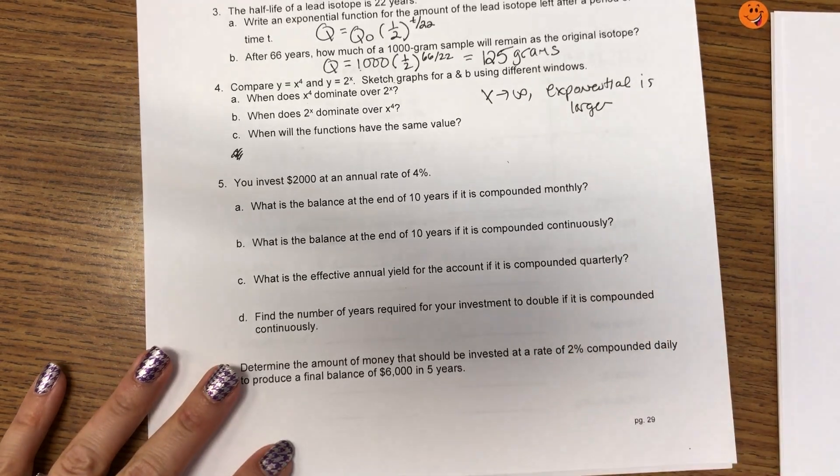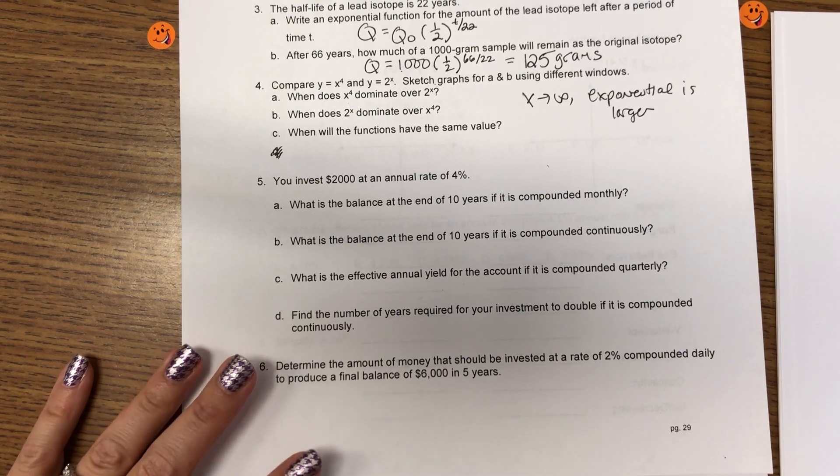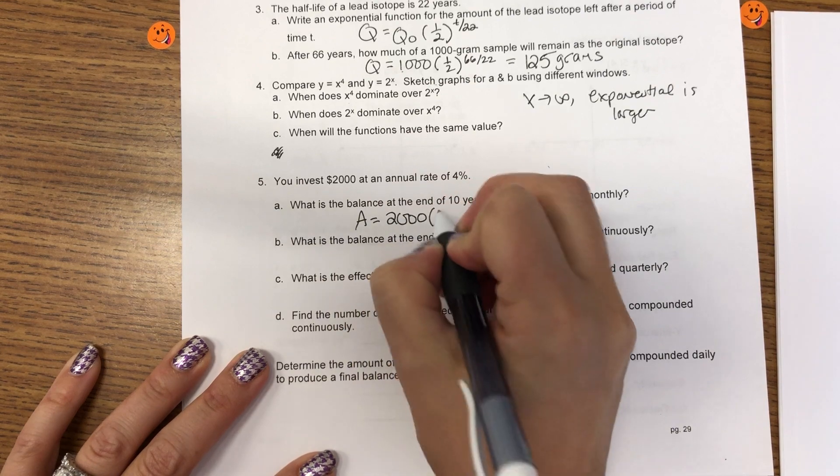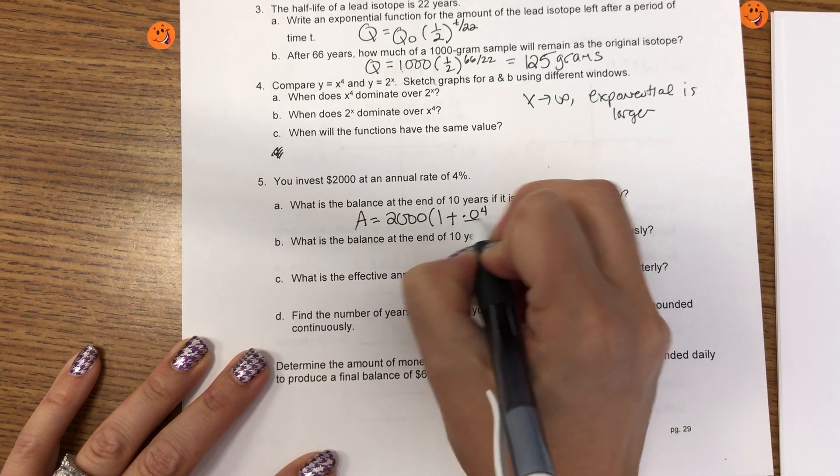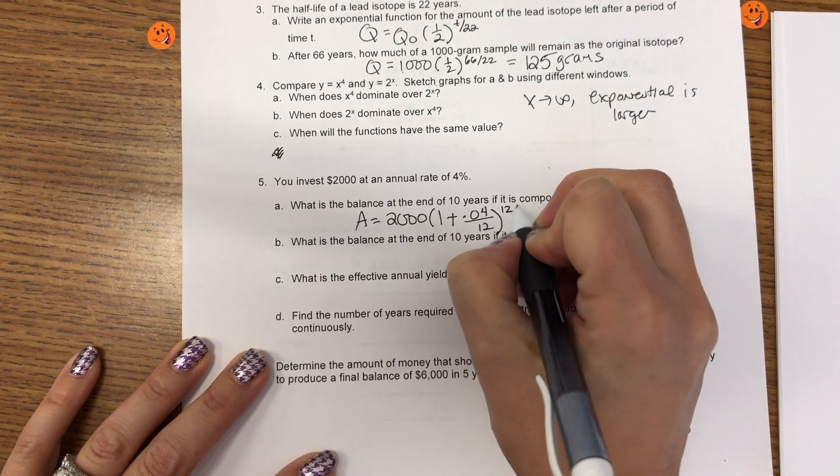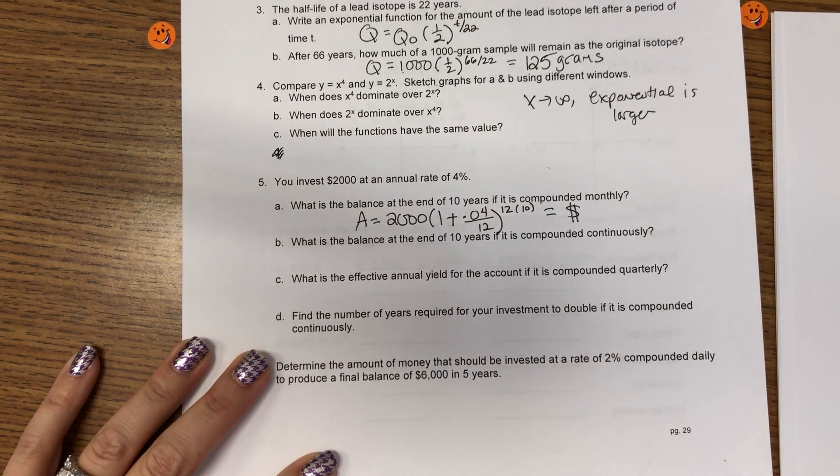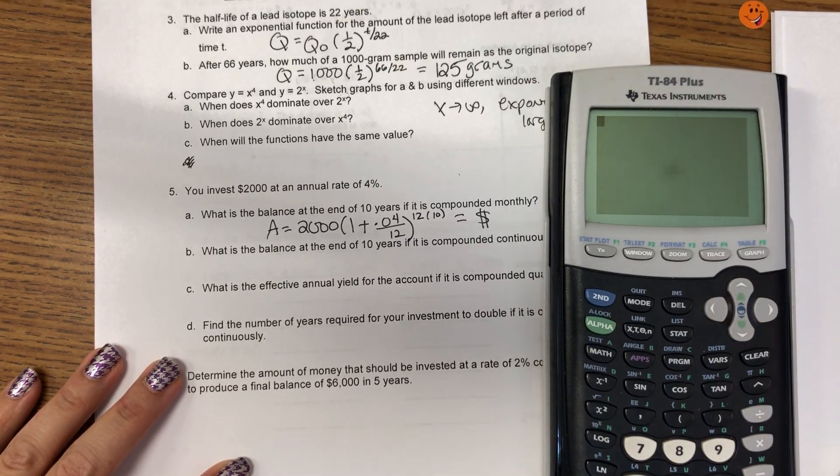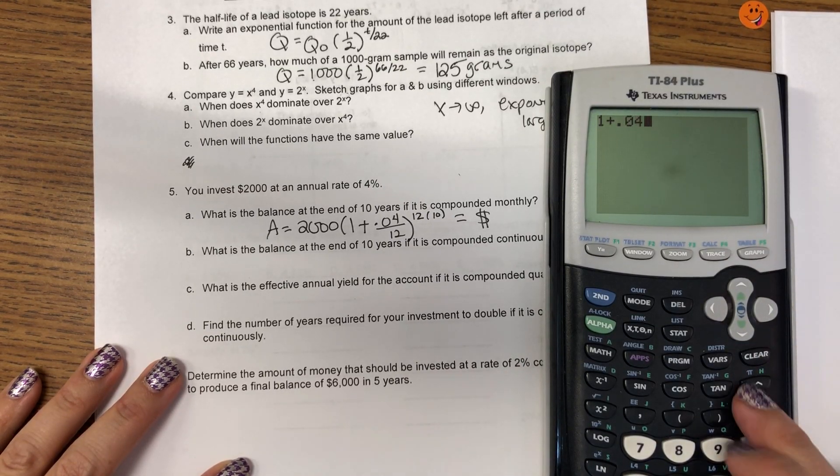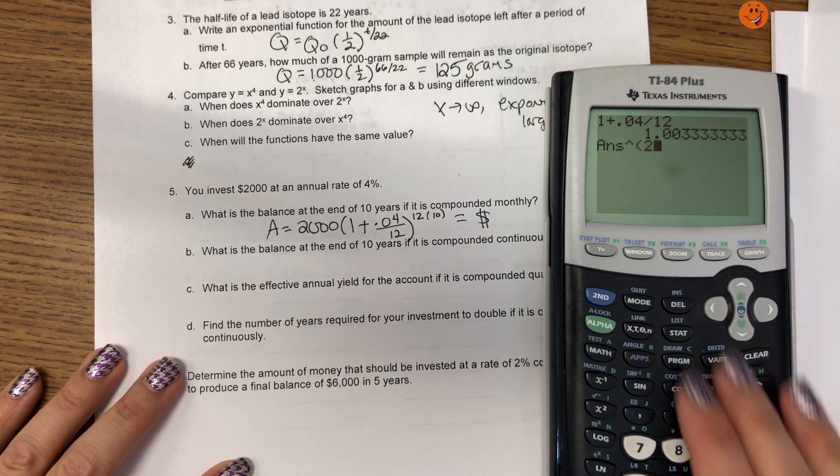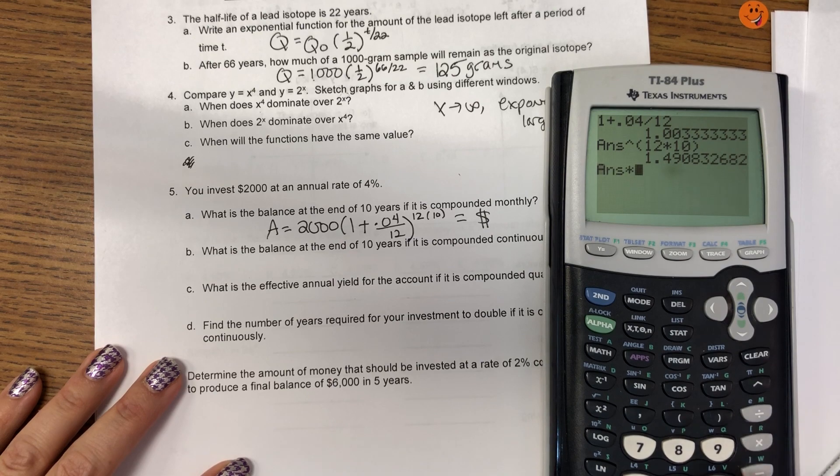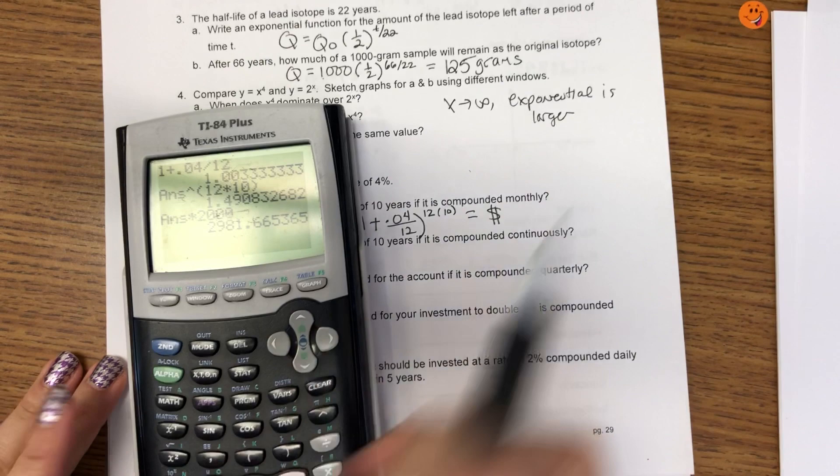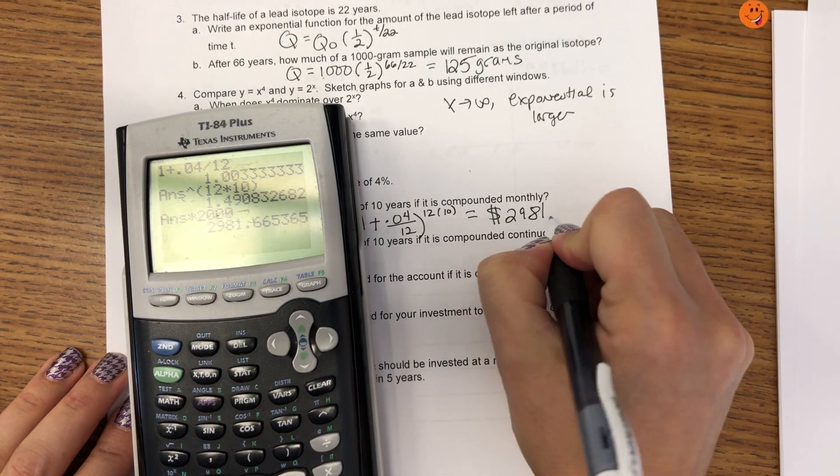Alright, number five, you invest $2,000 at an annual rate of 4%. What will your balance be? So, this is compound interest. Monthly, there's 12 months times 10 years. Our amount of money is $2,981.67.